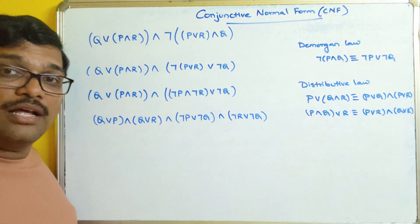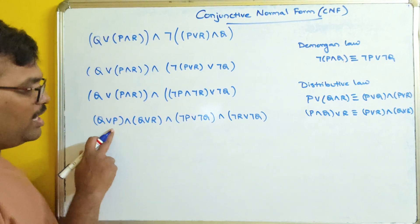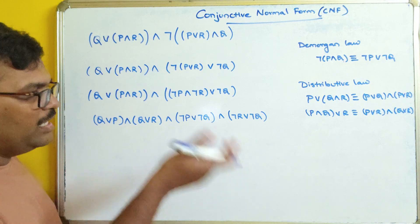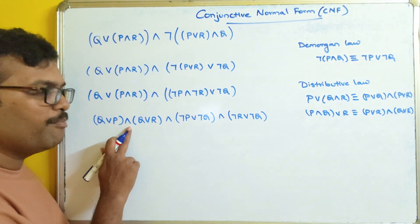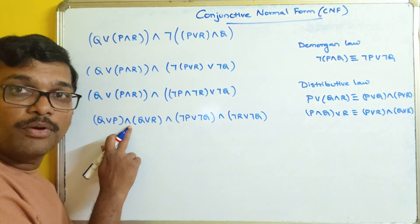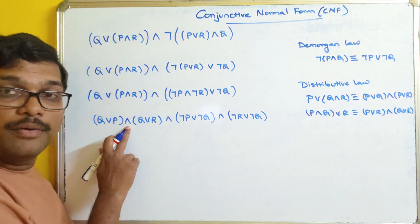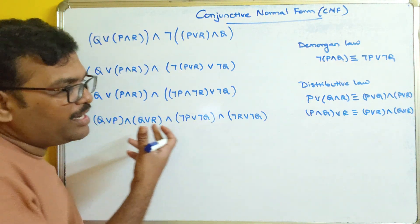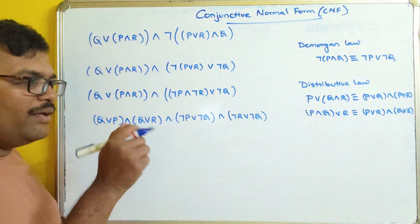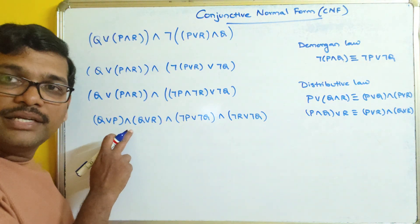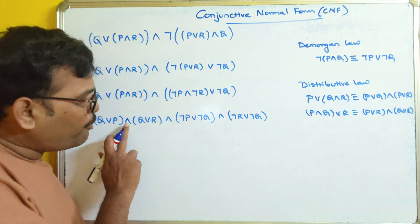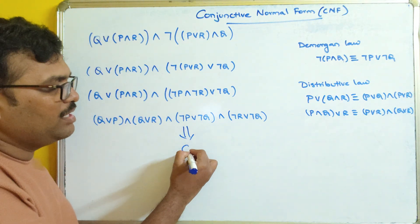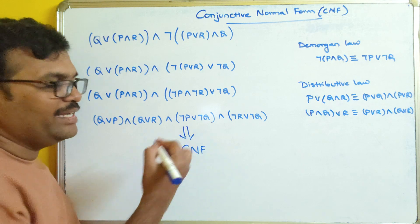Now you can observe: this is an elementary sum, this is an elementary sum, this is an elementary sum, and this is also an elementary sum. In between all the elementary sums we have conjunctive connectives. All the elementary sums are differentiated with a conjunctive connective, which gives us a product of elementary sums. So this is in the format of CNF.